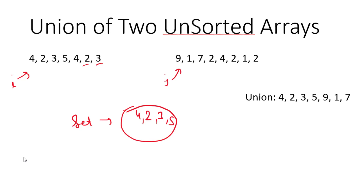Next, we iterate through the second array using index j and keep adding elements into the same set. 9 is not present, so it's added. 1 is added, 7 is added. When we reach 2, which is already in the set, it won't be added. Same for 4, 1, and 2 — all already present. Finally, all elements in the set are unique, matching our expected union of seven elements.